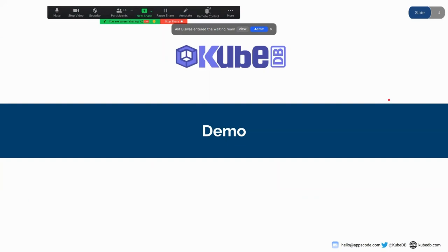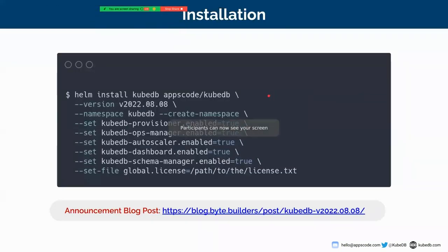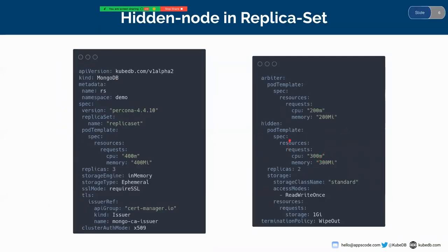So let's start the demo. For demonstration purposes, I have already installed KubeDB on my cluster using the August 8th 2022 version. You can go to kubedb.com to get the license and install KubeDB on your cluster. Here you can see a replica set YAML. The kind is MongoDB and the API version is kubedb.com/v1alpha2. I'm going to deploy this in a cluster. The MongoDB name is RS, which is in the demo namespace. The version I'm using is Percona 4.4.10, and the replica set name is simply replica set.